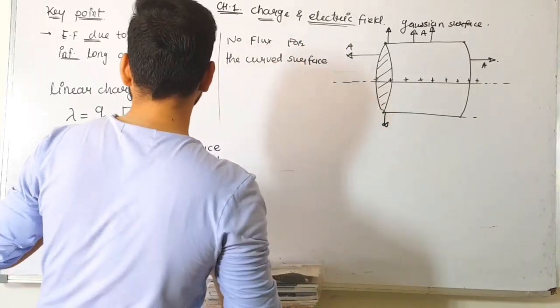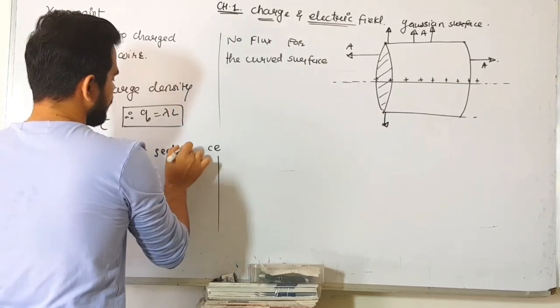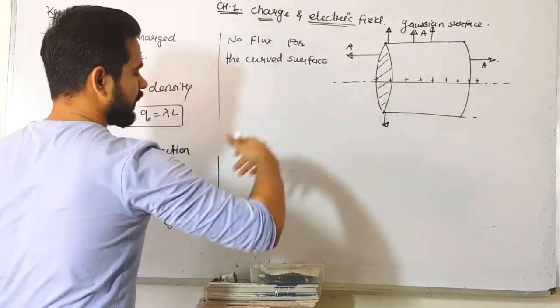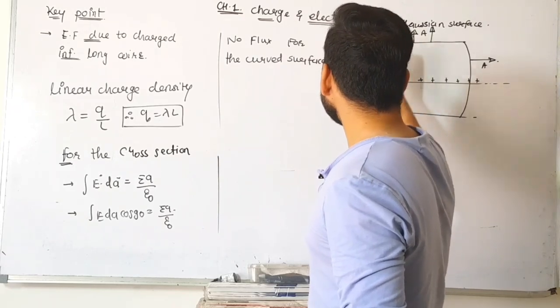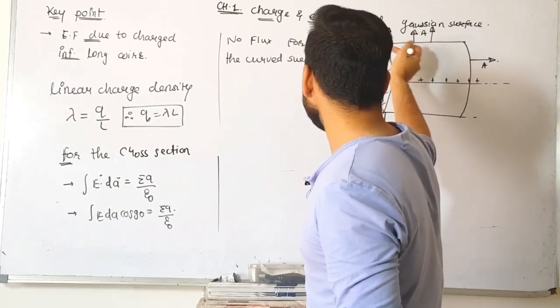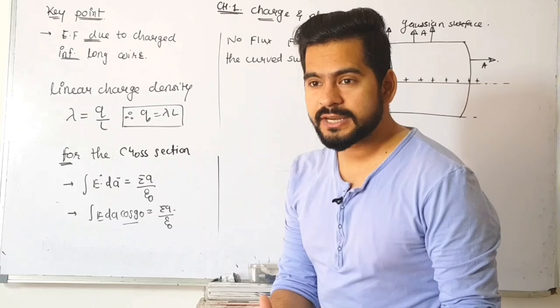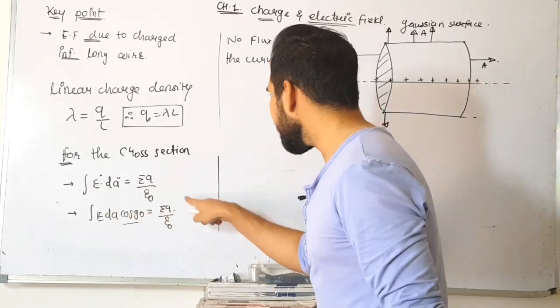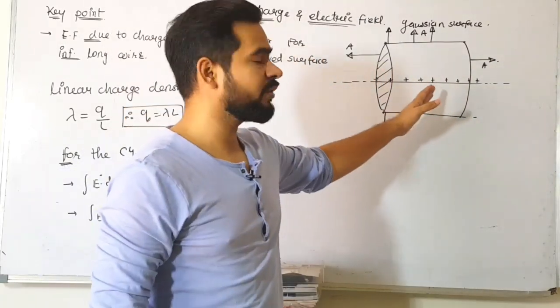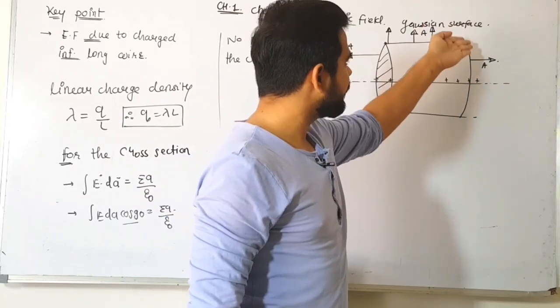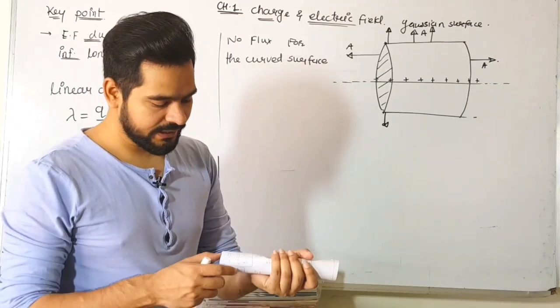For cross sections, what's the angle between area and electric field? Electric field is radial, but cross-section area points axially left or right. The angle is 90 degrees. With dot product, cos 90° = 0. So no flux through cross sections. Same for both ends—no flux.